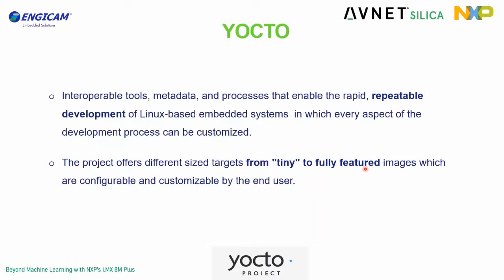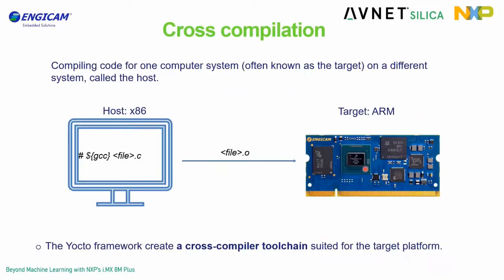You can create a Linux image that is tiny and lightweight, suitable to run on low-performance hardware, while still including all the packages needed for what you want that hardware to do — making it very efficient. At the same time, you can also create complex images able to run on higher-performance CPUs. One technical detail: Yocto uses cross-compilation, because in the ng-cam BSP virtual machine you compile software on an x86 architecture, but the iMX8M Plus has an ARM architecture.